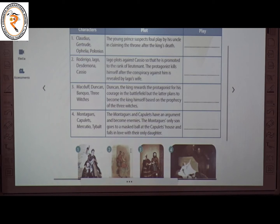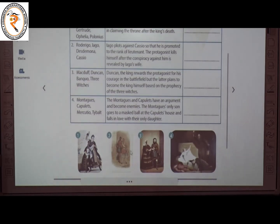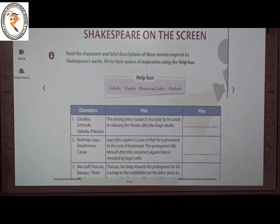The fourth one: characters are the Montagues, Capulets, Mercutio and Tybalt. The Montagues and the Capulets have an argument and become enemies. The Montague's only son goes to the masked ball at the Capulets' house and falls in love with their only daughter. The play is Romeo and Juliet. So these are all the Shakespeare on the Screen answers: Hamlet, Othello, Macbeth and Romeo and Juliet.